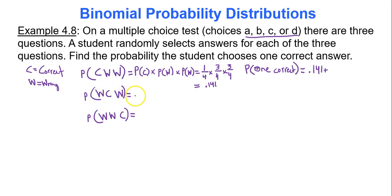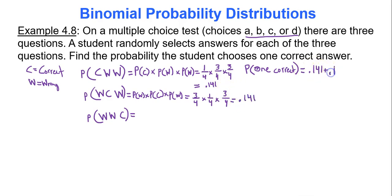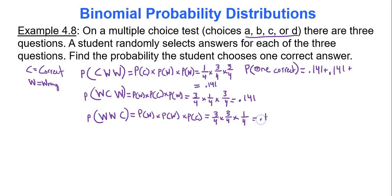For wrong-correct-wrong: the probability is 3/4 times 1/4 times 3/4 — the same fractions in a different order — still 0.141. For wrong-wrong-correct: it's 3/4 times 3/4 times 1/4, which gives 9/64 = 0.141. The same probability in each case.